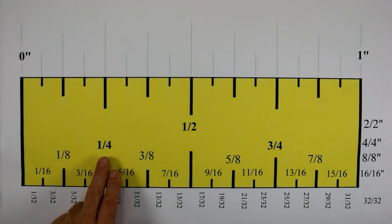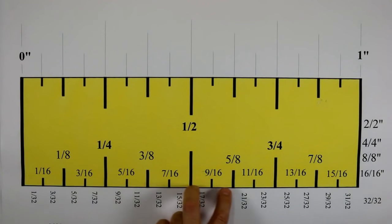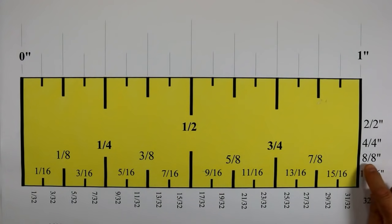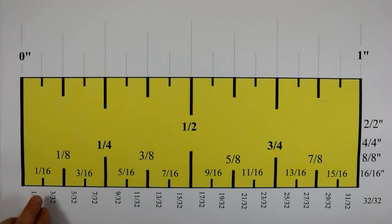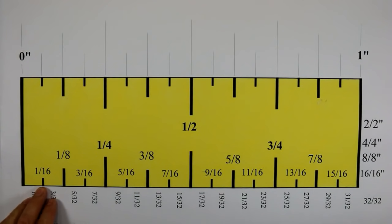And then we divide the quarter by two. So one inch. Now these little hash marks down here are sixteenths of an inch. There are sixteen sixteenths of an inch.